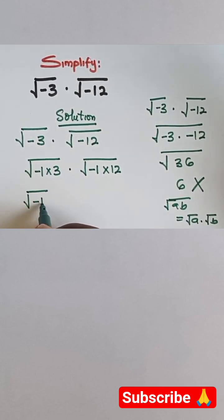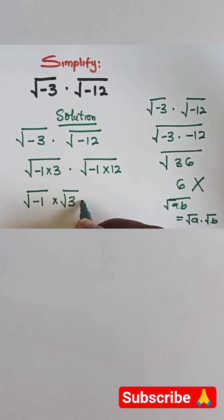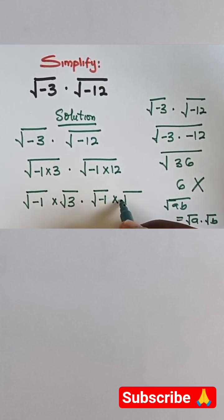So this gives √-1 multiplied by √3, and also we have √-1 multiplied by √12.